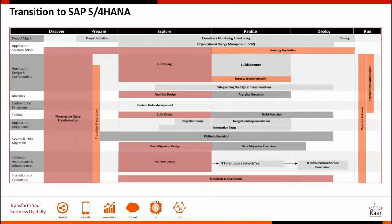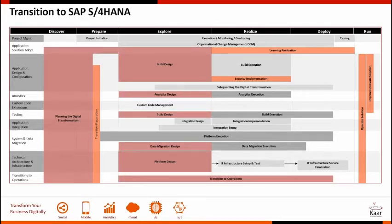This phase should ideally be performed by service providers who have done multiple S/4 conversions, as they understand the pain points and have tools and accelerators. We have our tool K-Turn, which does a comprehensive discover, assess, and plan — and the output helps you build a business case for approval. We also recommend running certain pre-checks on a copy of production in your sandbox, which will help you zero in on a more realistic timeline and resource requirements, since S/4 conversion is a completely data-driven and functionally-driven project.